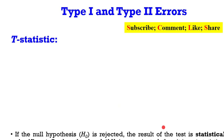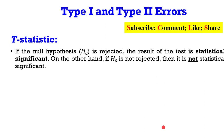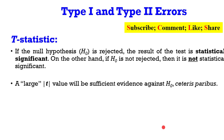Let's take a look at the T-statistic. If the null hypothesis is rejected, it shows that the test result is statistically significant. On the other hand, if the null hypothesis is not rejected, then it shows that those coefficients are not significant. That implies that a large T-statistic will be sufficient evidence against the null, all things being equal.